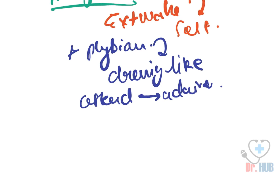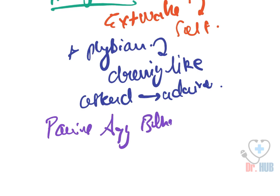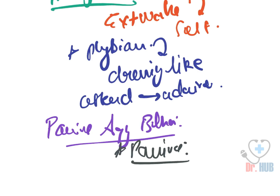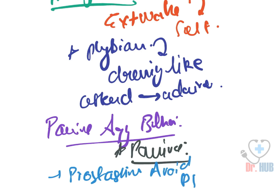Next we move on to passive aggressive behavior. In passive aggressive behavior, the aggressive intent is cloaked by a passive method. An example is procrastinating work in order to avoid a promotion. This is passive aggressive behavior.